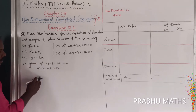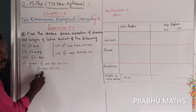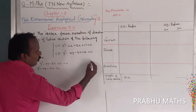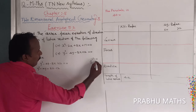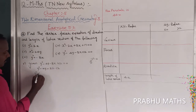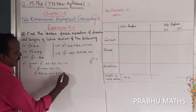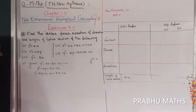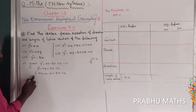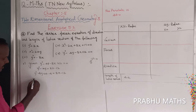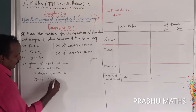Now convert the left-hand side to a perfect square. Take the coefficient of y, which is 4, divide by 2 to get 2, then square it to get 4. Add and subtract 4: y squared minus 4y plus 4 minus 4 equals 8x minus 12. The -4 moves to the right side.